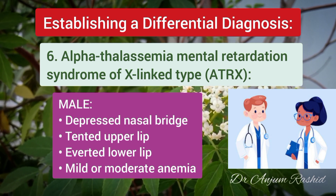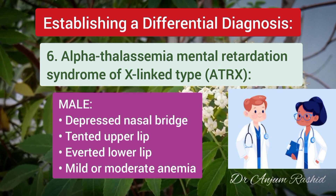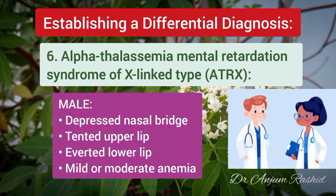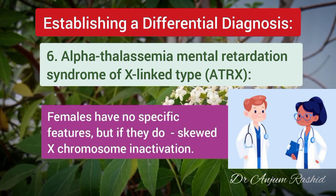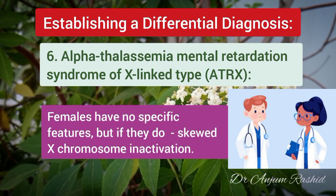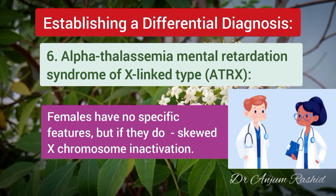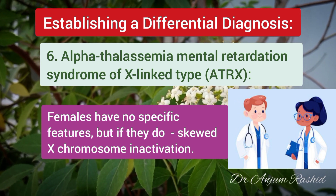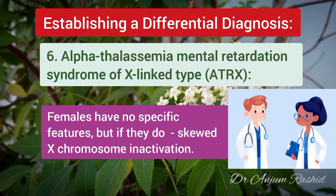Mild to moderate anemia associated with alpha-thalassemia is a part of this condition. Females with this mutated gene typically have no specific signs or features, but if they do, they may demonstrate skewed X chromosome inactivation.